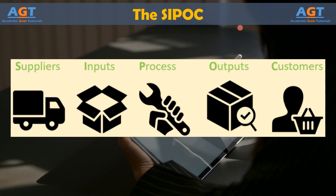SIPOC stands for Suppliers, Inputs, Process, Outputs, and Customer. For the purposes of a SIPOC, inputs and outputs follow the same guidelines described previously in this chapter. Suppliers are the people, processes, and organizations that supply inputs to your process. Customers are the people, processes, and organizations that make use of the outputs of your process. The process itself is the series of steps that take the inputs and make them outputs.